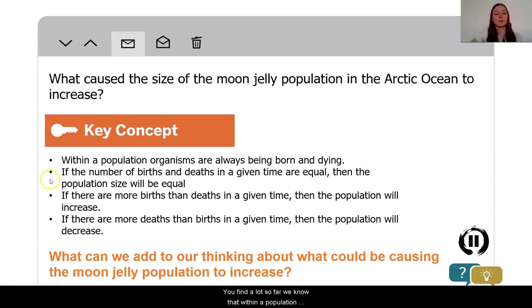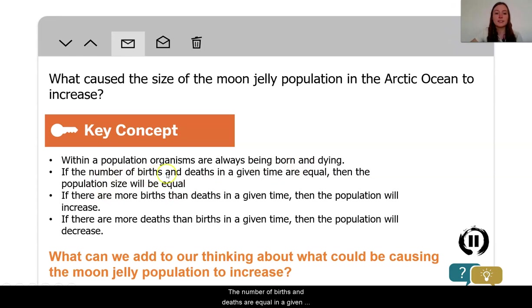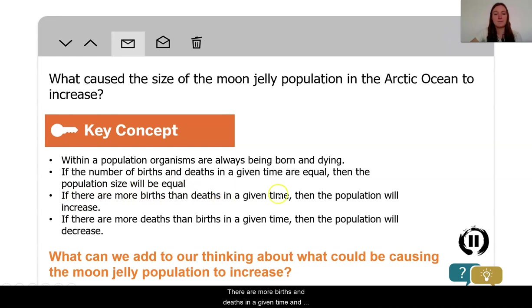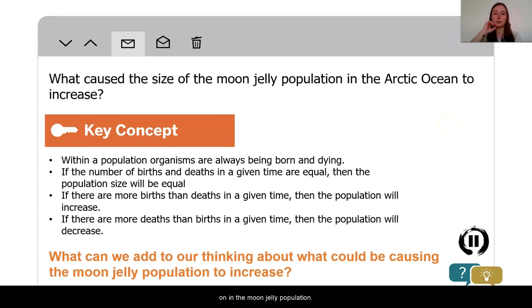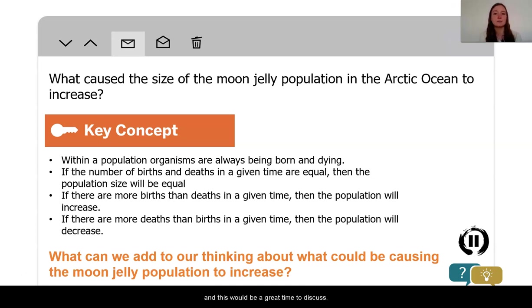We have learned a lot so far. We know that within a population, organisms are always born and always dying. If the number of births and deaths are equal in a given time, then the population size will be stable. If there are more births than deaths in a given time, then the population will increase. If there are more deaths than births in a given time, then the population will decrease. So what can we add to our thinking about what is going on in the moon jelly population? Using our new learning, what do we know about the births and deaths in the moon jelly population, because we know that the moon jellies are increasing?